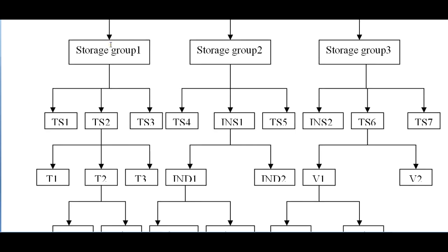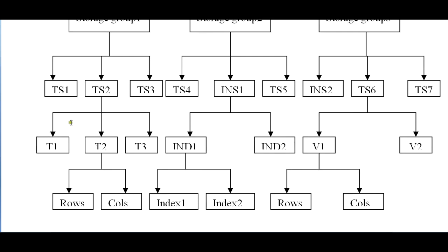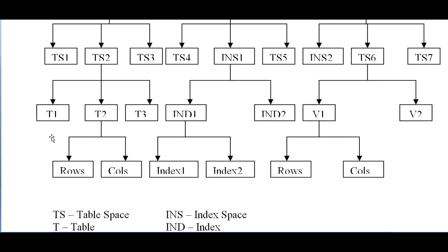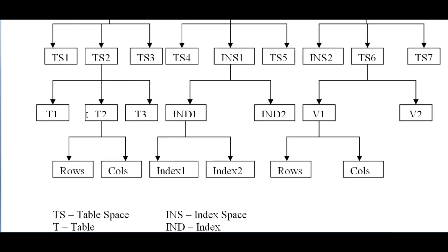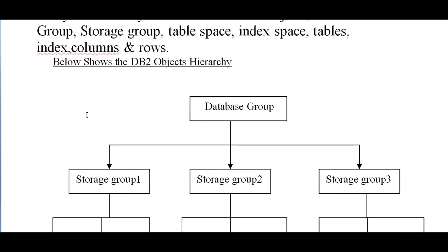So this would be the hierarchy: storage groups, table space, index space, tables, rows, and columns. This is the hierarchy of any database group.